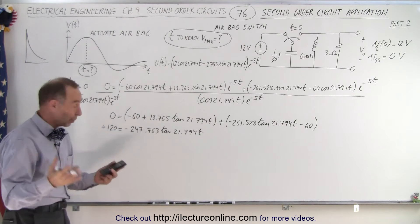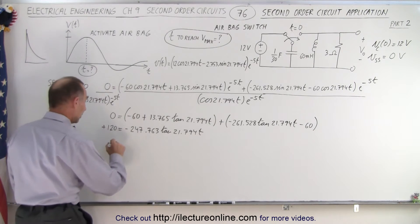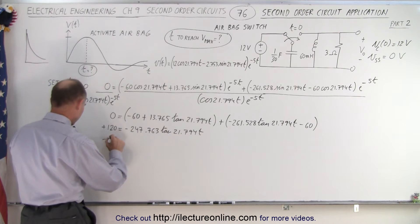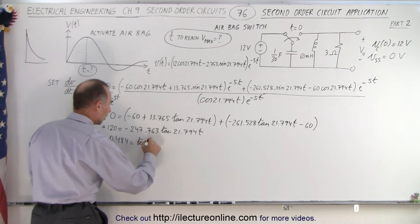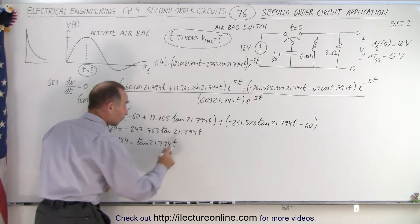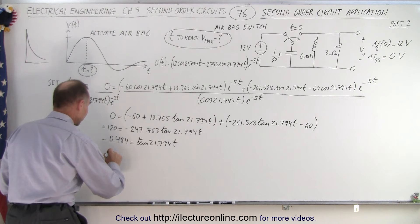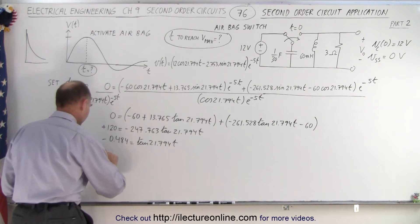Well now we of course divide both sides by the negative 247, so we take that one over x times 120, and so now we end up with minus 0.484 is equal to the tangent of 21.794t. And of course at this point we take the inverse tangent, so we can then say that the inverse tangent...